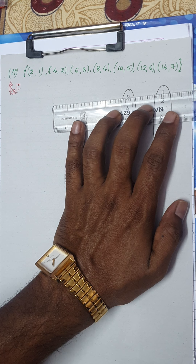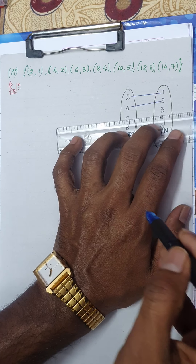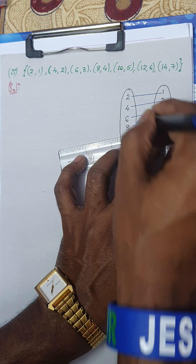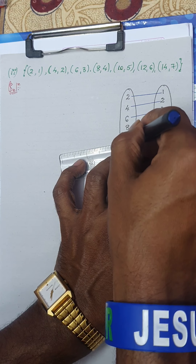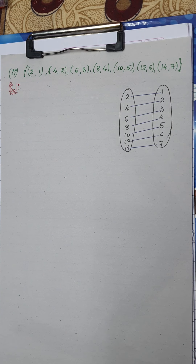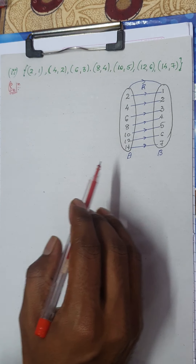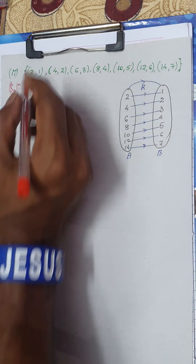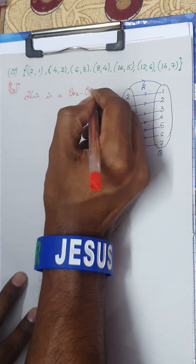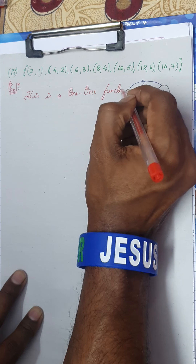Let us map it: 2 is mapped to 1, 4 is mapped to 2, 6 is mapped to 3, 8 is mapped to 4, 10 to 5, 12 to 6, and 14 to 7. Looking at this, you can directly say this is definitely a function. You can also say what type of function this is - this is a one-one function. One-one means unique elements have unique images.